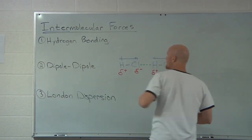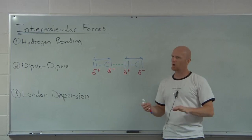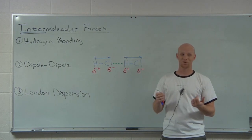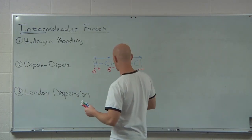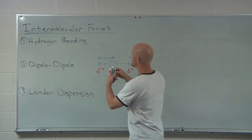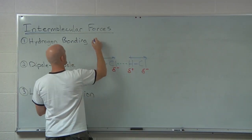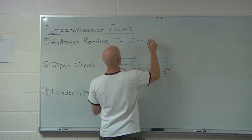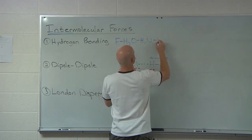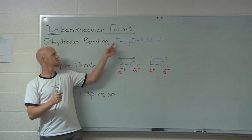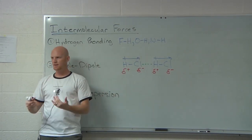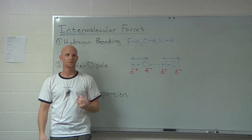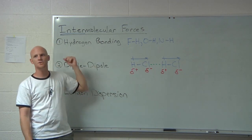Hydrogen bonding is really, for the most part, a super-duper strong dipole-dipole force. There's a little more to it, but that'll work for this class. The only way you have a super-duper dipole-dipole force is if you have one of three bonds in your structure: an F-H bond, an O-H bond, or an N-H bond. These three bonds are really polar, and it also plays into the fact that hydrogen is really small. When you have one of these three really polar bonds, you are capable of this interaction called hydrogen bonding.